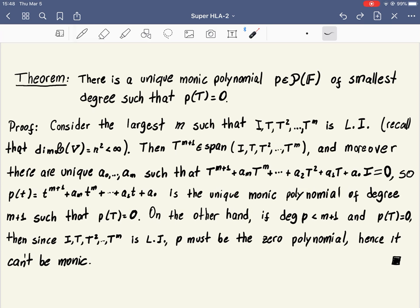So let's go to the proof. First, we know that dimension of the space of linear maps of linear operators on V is finite. Since it's finite, as we take identity, then T, then T composed with T, which we call T squared, and we keep going, eventually this collection can no longer be linearly independent.